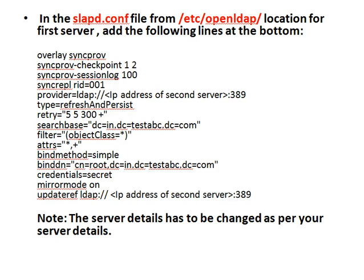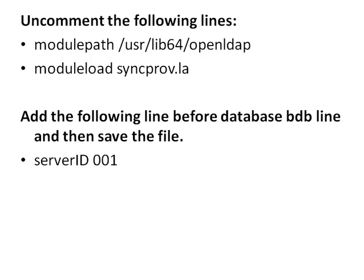In the primary server, open the slapd.conf file located at /etc/openldap and add the following lines at the bottom, changing the server details according to your server data. Then uncomment the two lines — module path and module load — and add those lines before the database line, then save the file.